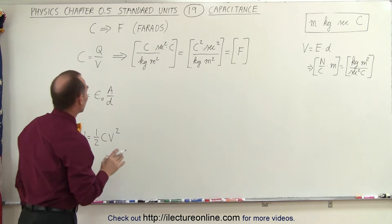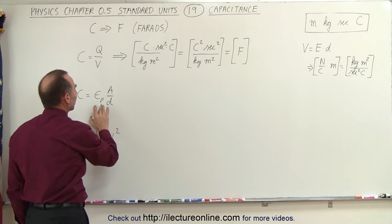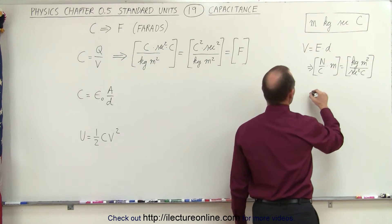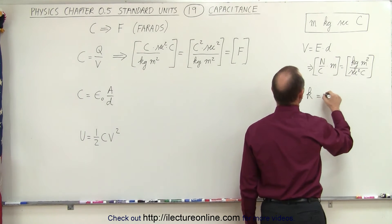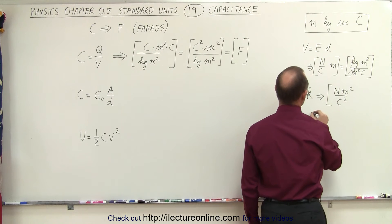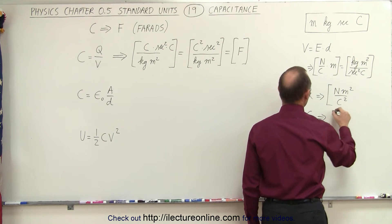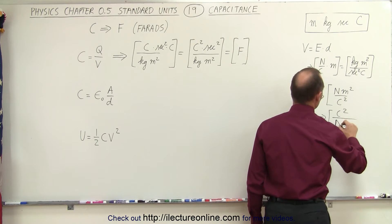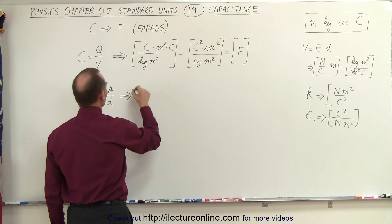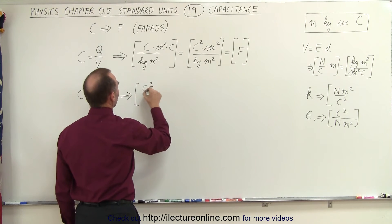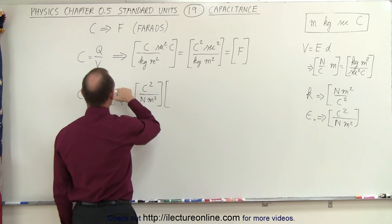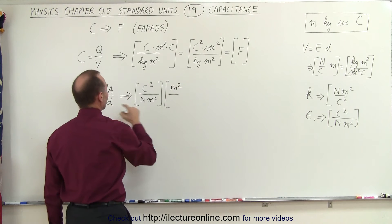This is equal to the units of Farads. Now let's verify by using the physical dimensions of a capacitor. We need the units for the permittivity of free space, epsilon-naught. The units for k from Coulomb's law are newtons times meters squared divided by coulombs squared, so for epsilon-naught it's the inverse: coulombs squared divided by newtons times meters squared. We then multiply by area — meters squared — divided by distance — meters.